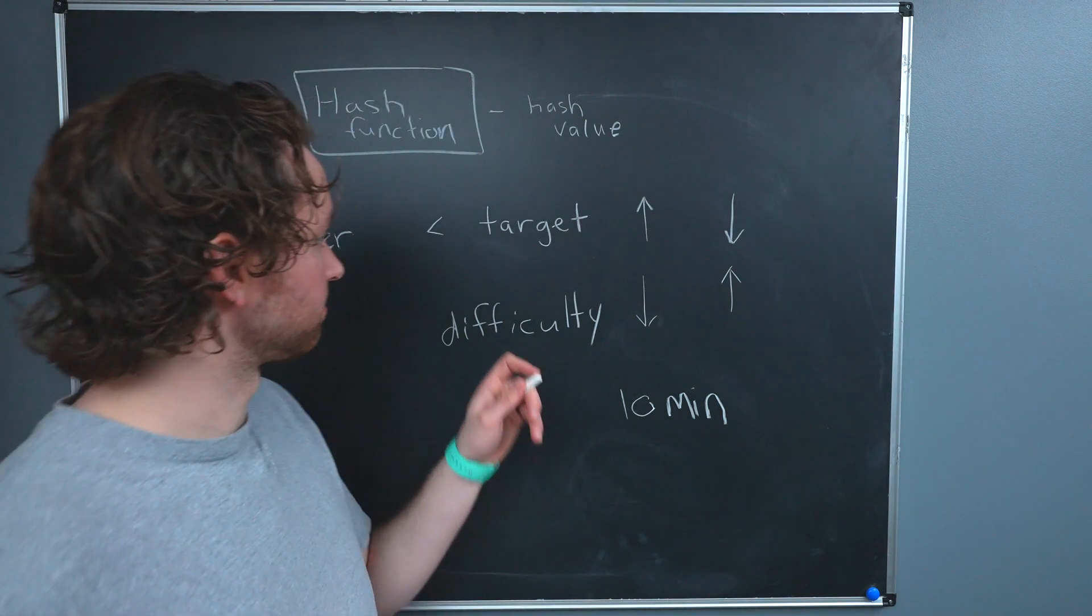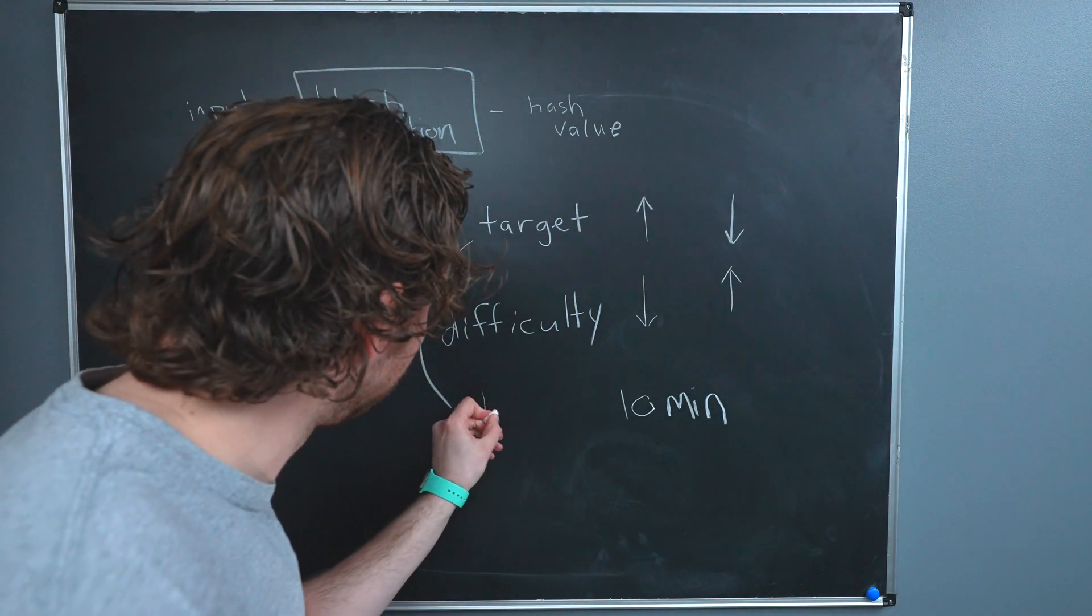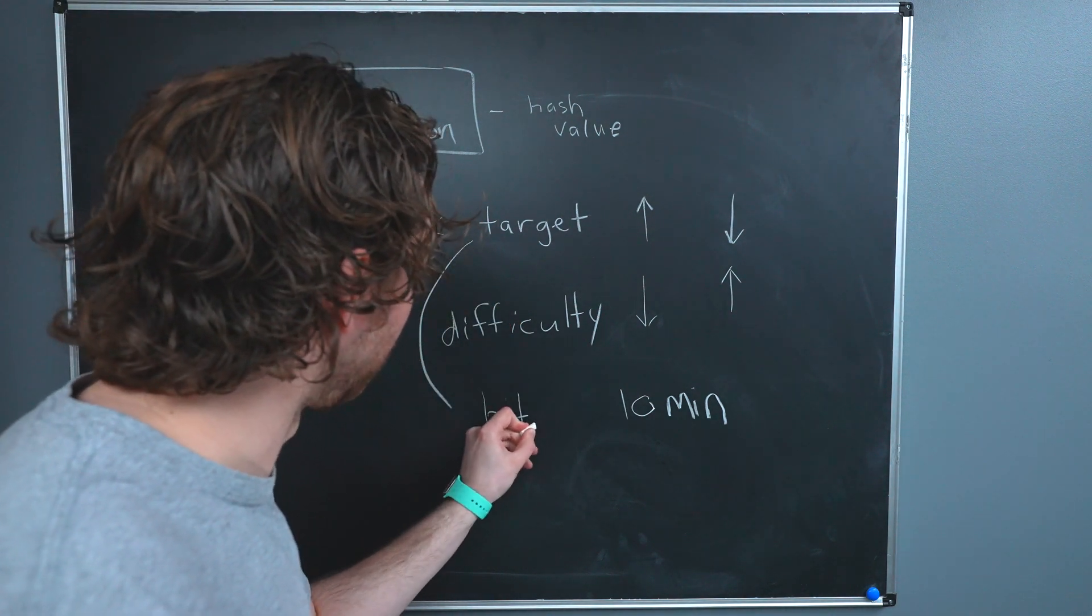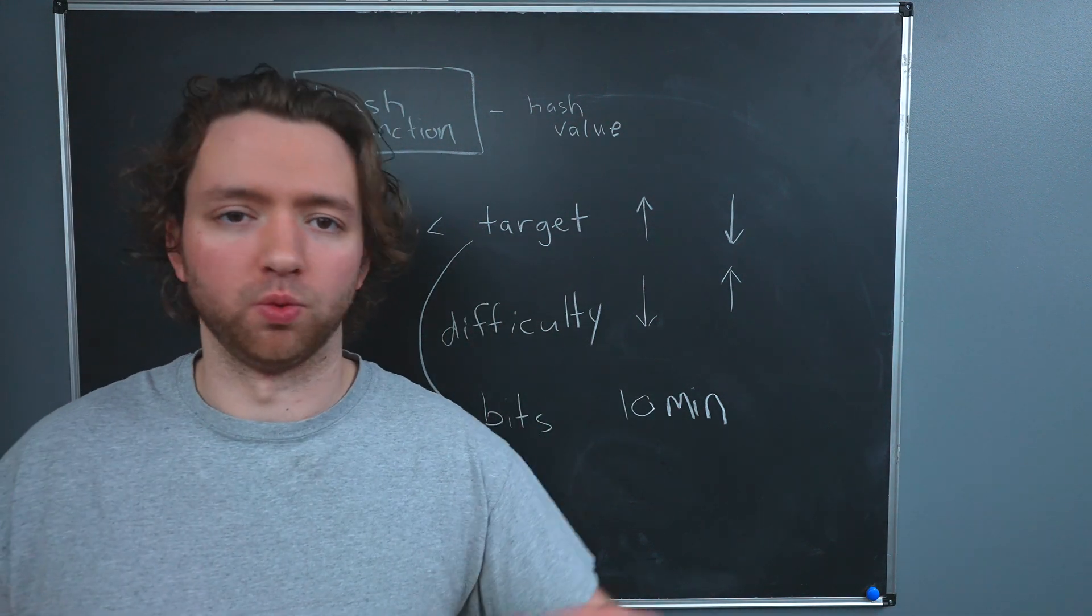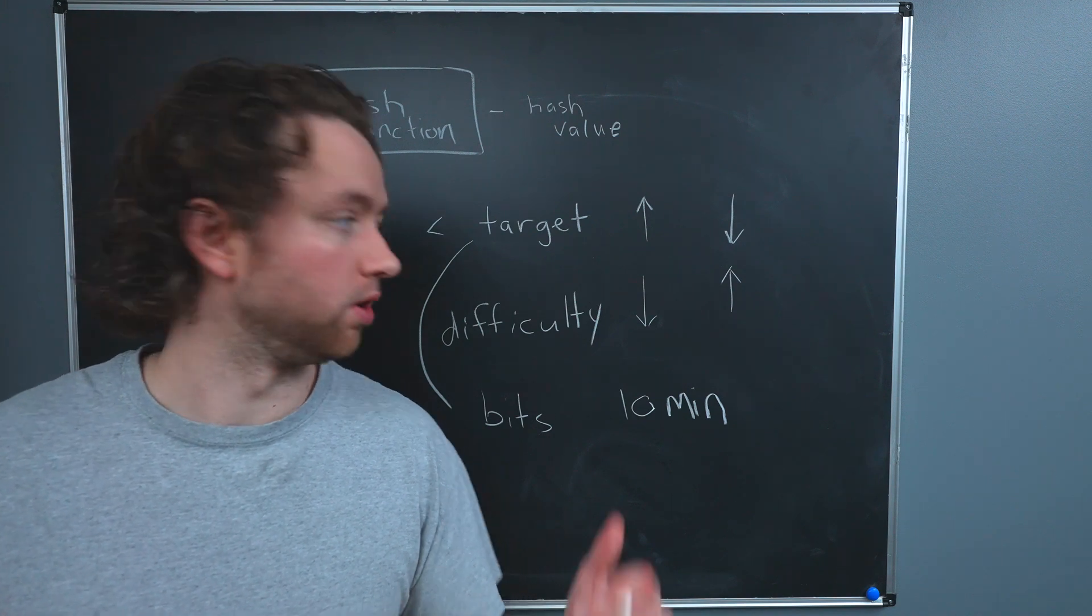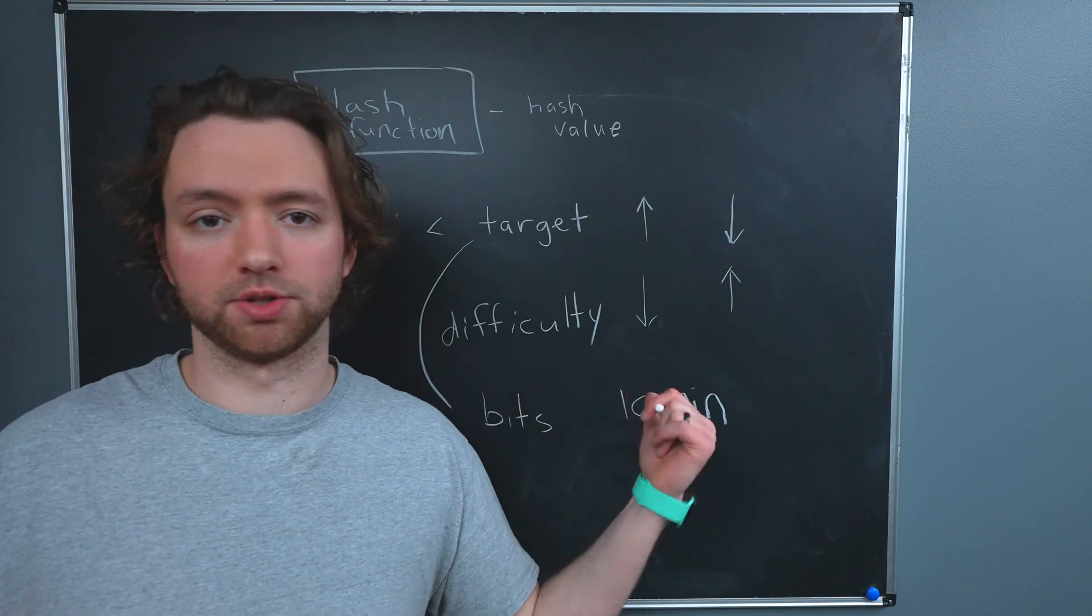Now, if you're looking at a blockchain explorer, you might see this target in the block header as bits. That's what it's talking about. Reading this target isn't 100% clear because it's encoded. So difficulty is just a more friendly option to look at.